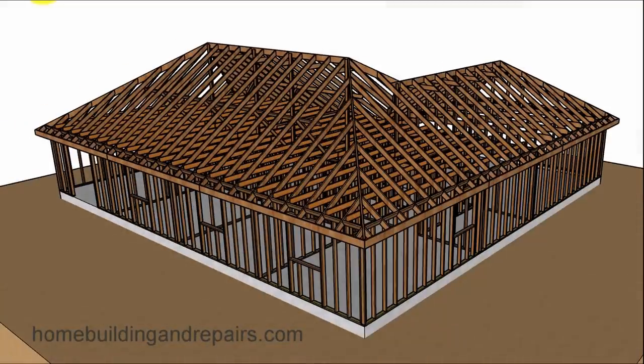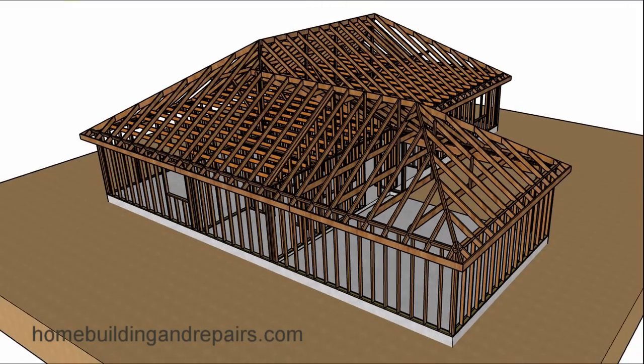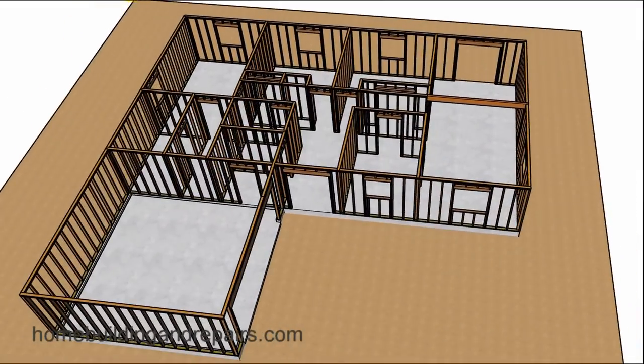2 by 6 ceiling joists, 2 by 6 roof rafters, each spaced 24 inches on center except for the garage rafter ties, which will be 2 by 6 spaced 4 foot on center. I'll give you a look at the floor plan.